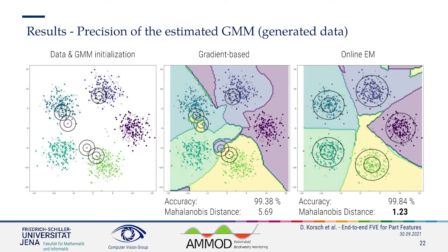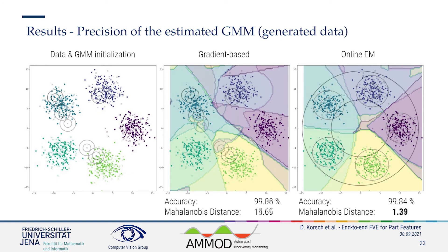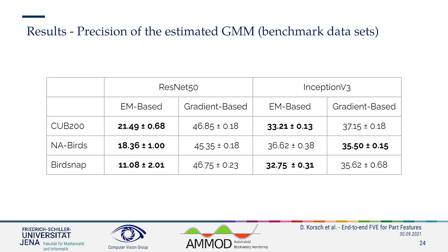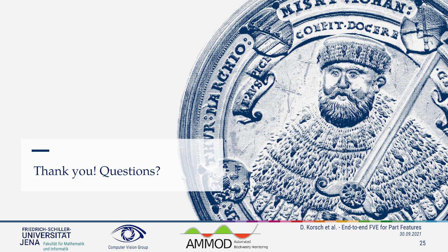Looking at the 2D data showing the GMM initialization and the GMM parameters after training, we see that our online EM algorithm manages to match the data better than the gradient-based method for both k equals five and k equals one. Finally, we performed the same evaluation for the benchmark datasets and confirm that our proposed online EM algorithm estimates the parameters more precisely than the gradient-based method. Thank you for your attention and I would be glad to answer your questions in the chat.